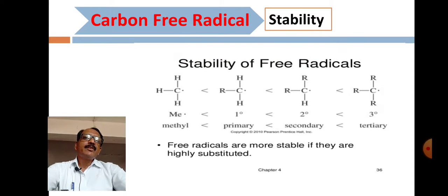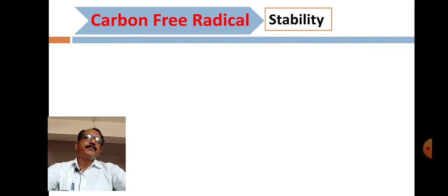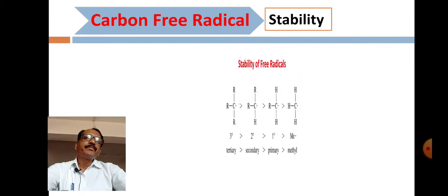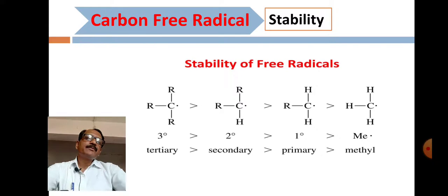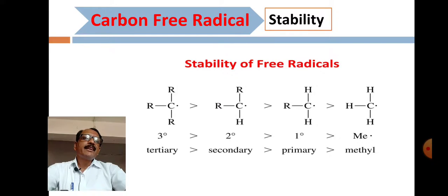This stability order can be shown as: methyl < primary < secondary < tertiary. In short, tertiary free radicals are highly stable, and methyl free radicals are the least stable.